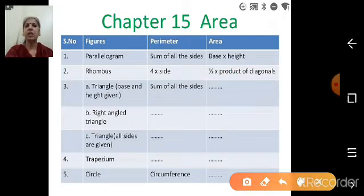Similarly, rhombus. Rhombus, perimeter is same, sum of all sides. But all sides of rhombus are equal, congruent. So what you have to do? You have to multiply length of side with 4. 4 into side. And formula of area, half into product of diagonals. Right?